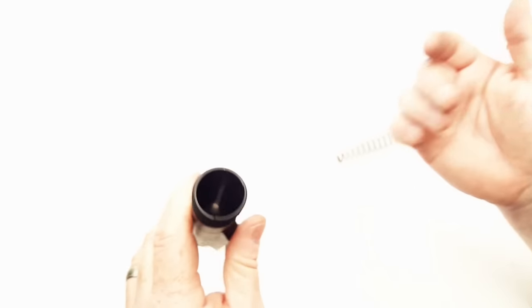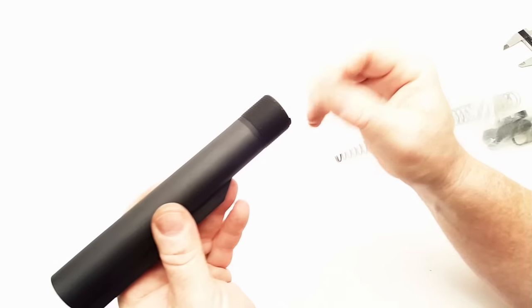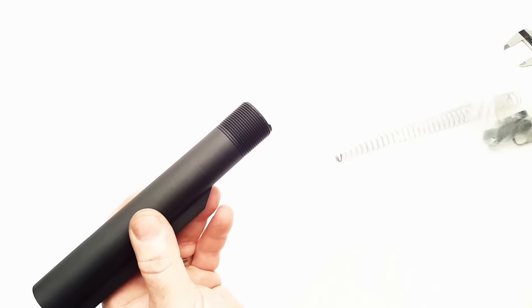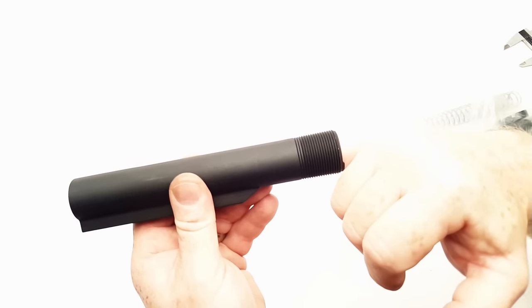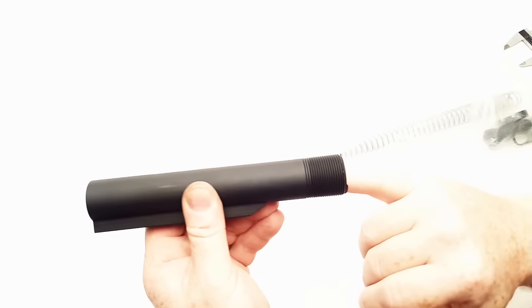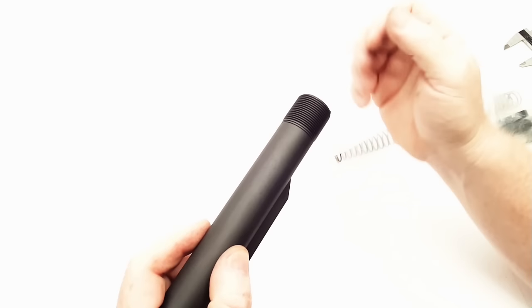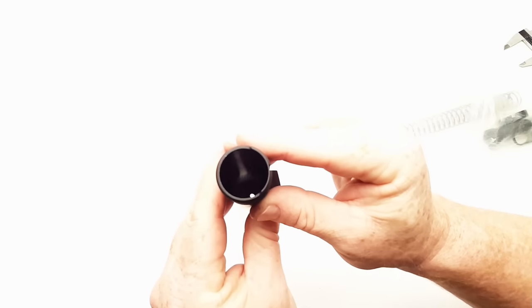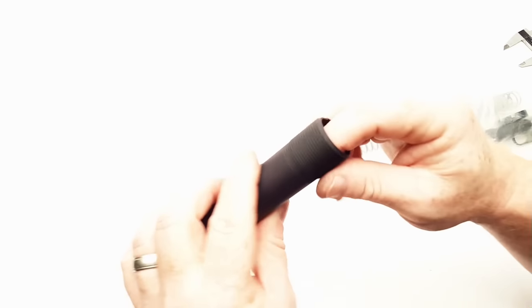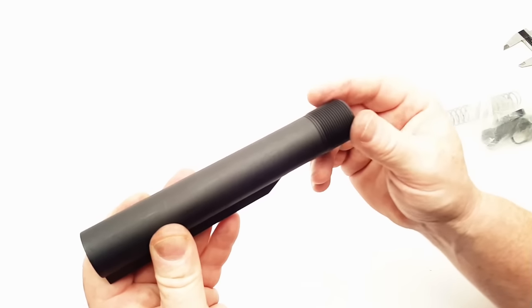Now, secondly, or thirdly, lost count. The threads here, look at how they flatten out towards the tube side. Now I'm not a big fan of that, but it is what it is. This whole tube set costs me like $24.95 with the buffer, the spring, the castle nut, and the base plate. So beggars can't be choosers.